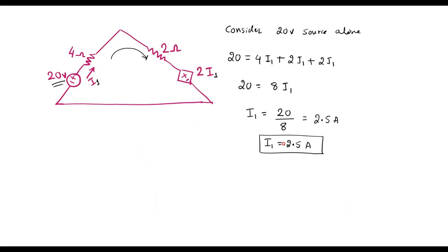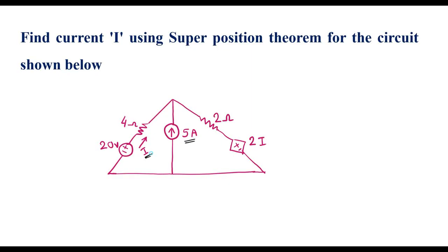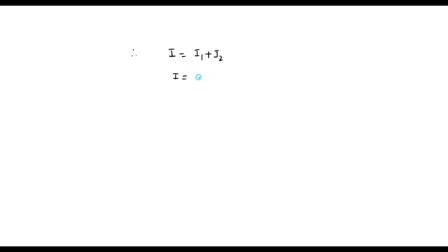I1 is the current considering the 20 volt source alone, with a value of 2.5 amp. I2 is the current considering the 5 amp source alone, with a value of minus 1.25 amp. By superposition, the total current I equals I1 plus I2, which is 2.5 plus minus 1.25, therefore I equals 1.25 amp. This is the current flowing in the circuit, calculated using superposition theorem.